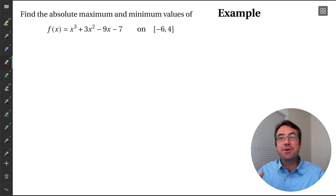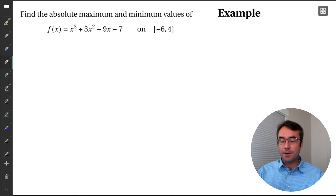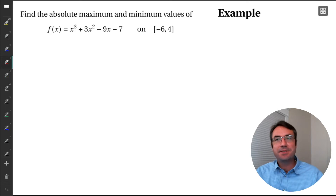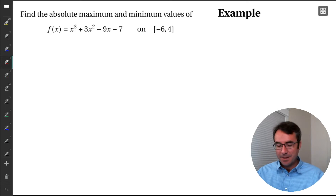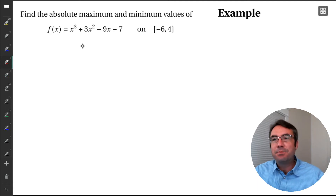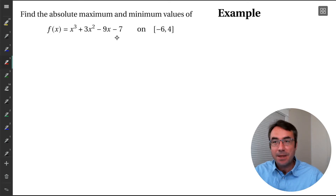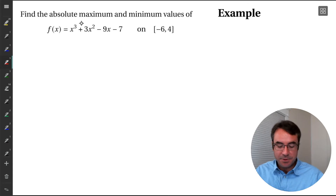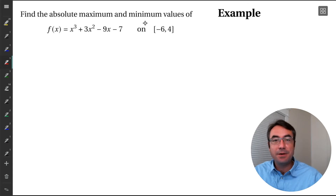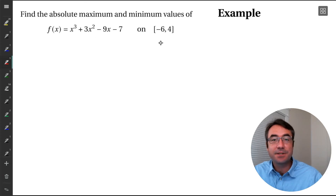Let's see how the extreme value theorem and closed interval method work for a nice example. We have the polynomial x cubed plus 3x squared minus 9x minus 7, and we're going to find the absolute maximum and absolute minimum values of this function on the closed interval from negative 6 to 4.